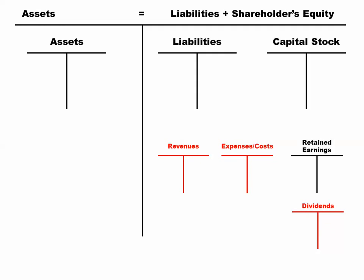We've got our temporary accounts — revenues, expenses, costs, and dividends — they're going to go to the bottom for now. Debits and credits never change. Debits are on the left, credits are on the right, exactly the same as it was before.